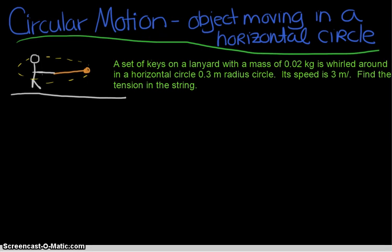Hi everyone, today we're going to take a look at some circular motion problem solving. Imagine you have a set of keys on a lanyard with a mass of 0.02 kilograms and you spin it around so that the lanyard is taught. You have this straight line between you and the end of the keys here, and that length is about 0.3 meters.